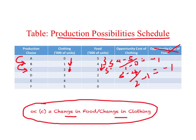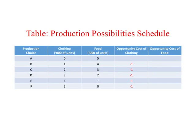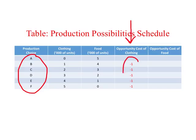Continuing this way, we calculate Opportunity Cost of Clothing at all production choices. Here is a cleaner version of the production possibility schedule showing OCC at each point when moving from one choice to another. What we find is that Opportunity Cost of Clothing is a negative number and this number is fixed throughout. The negative sign simply indicates that you give up something in order to gain something.